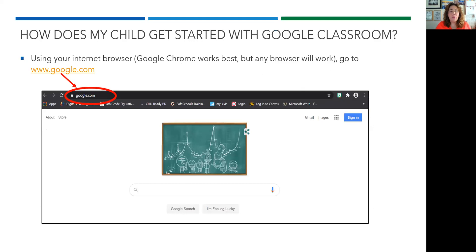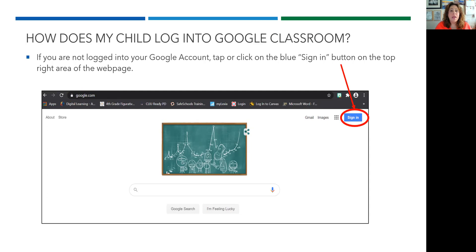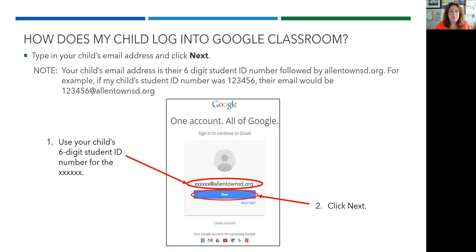How does your child get started with Google Classroom? Using an internet browser — Google Chrome works best, but any browser will work — go to www.google.com. If you are not logged in to your Google account, tap or click on the blue sign in button on the right top of the webpage. Then type in your child's email address and click next.